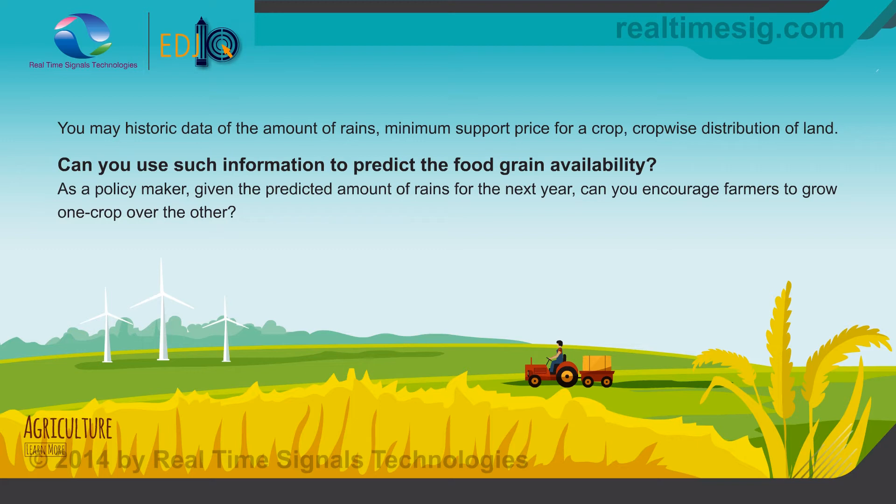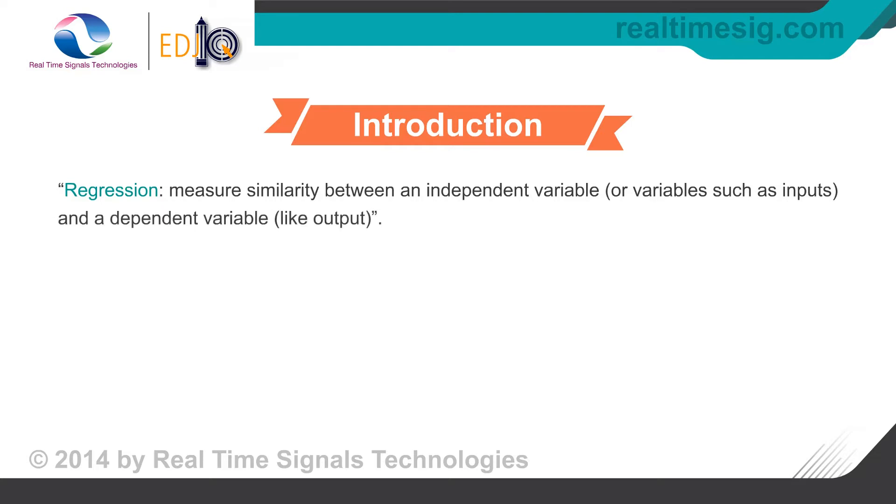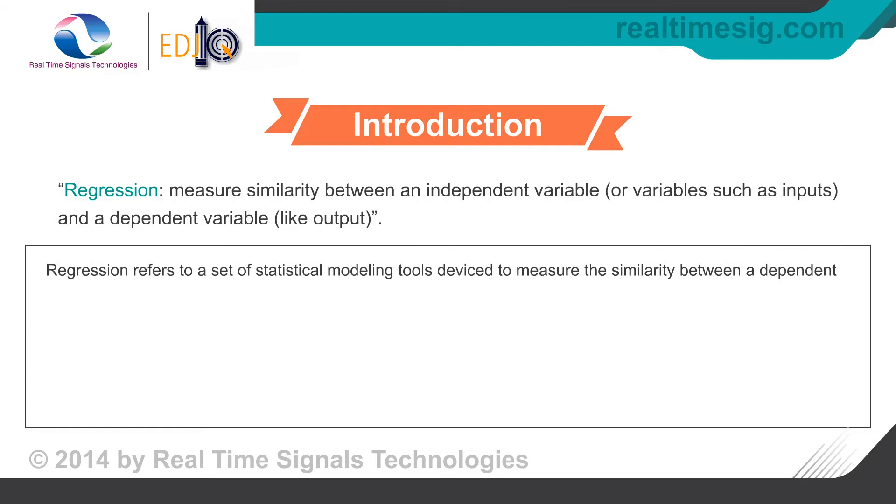Regression measures similarity between an independent variable or variables such as inputs and a dependent variable, like output. Regression refers to a set of statistical modeling tools devised to measure the similarity between a dependent variable and one or more independent variables. Measured similarity is then used to do prediction.